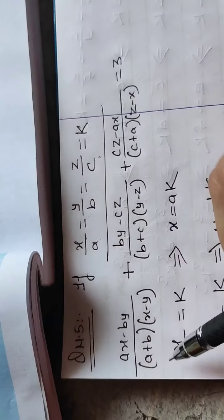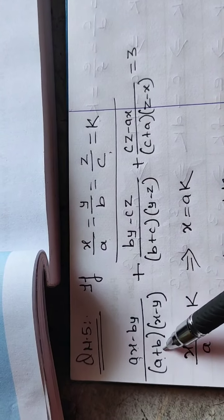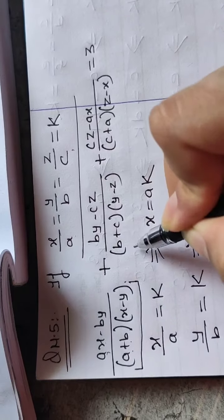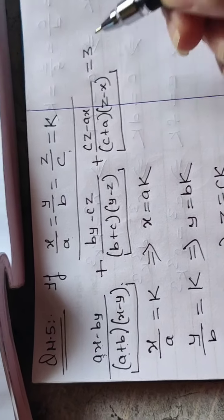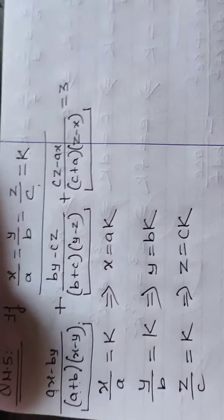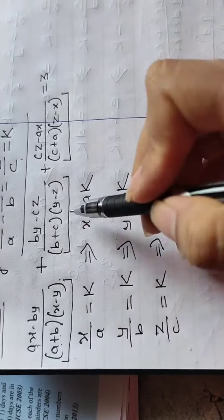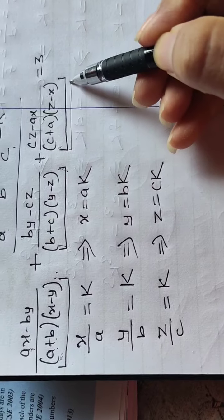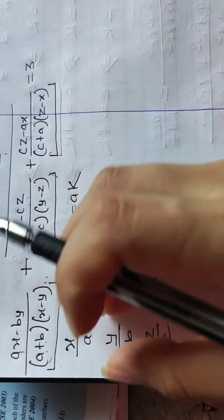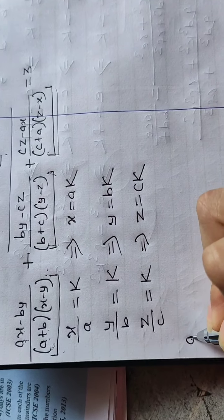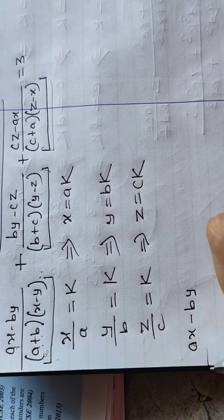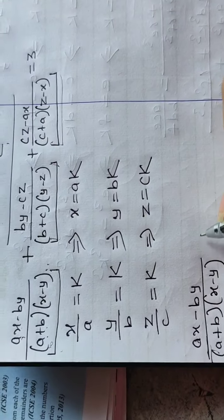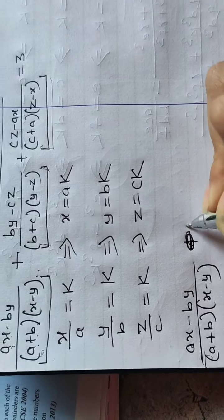Now the left hand side is AX minus BY upon (A plus B) into (X minus Y). The question is divided into 3 parts. You could do it directly, but it will be lengthy. So divide the question into 3 parts: first do this part, then this part, then this part, then add the 3 parts. So first I am doing the first part: AX minus BY upon (A plus B) into (X minus Y).